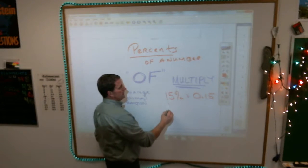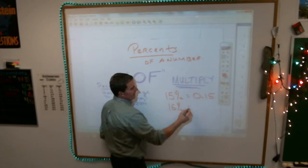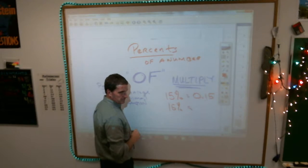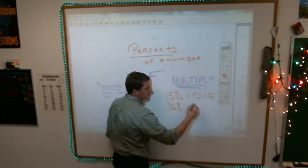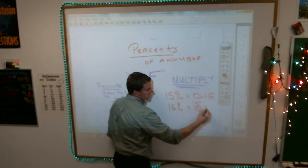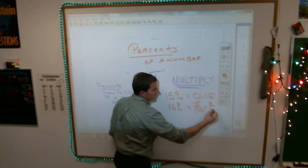If I were changing 15% to a fraction, what does 15% mean? Out of 100, so it is 15 hundredths, which reduces down, you can divide them both by 5 and end up with 3 over 20.